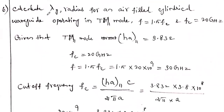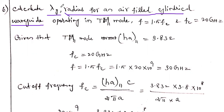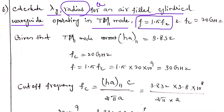Third question: calculate λg and radius A for an air-filled cylindrical waveguide. Here we have to find the radius, not just calculate from a given radius. The mode is TM11, the cutoff frequency Fc = 20 GHz is directly given, and f = 1.5 × Fc.